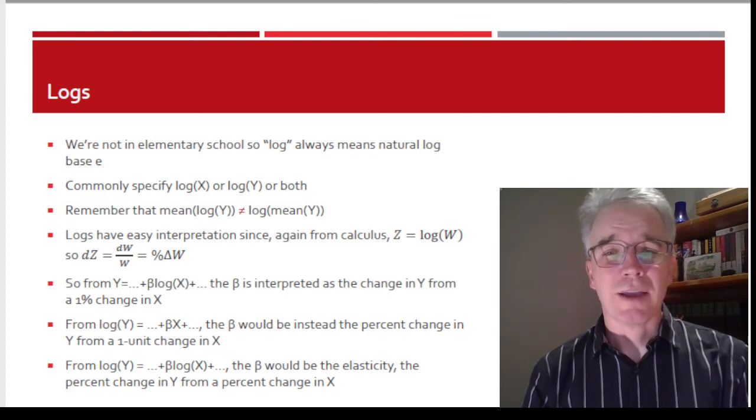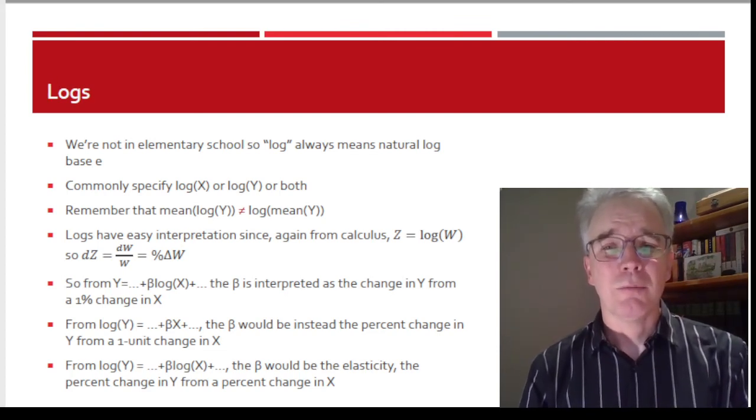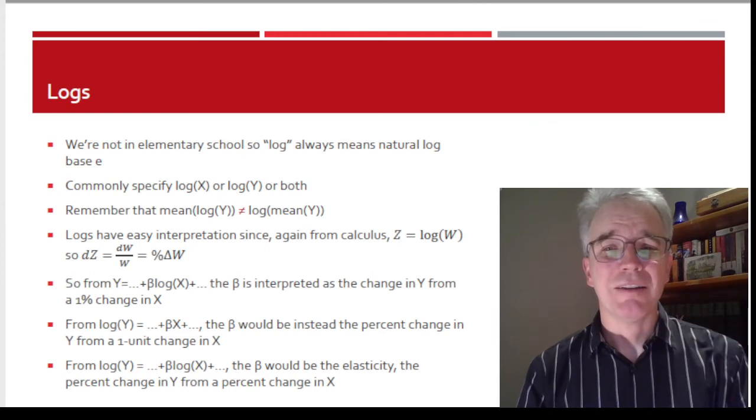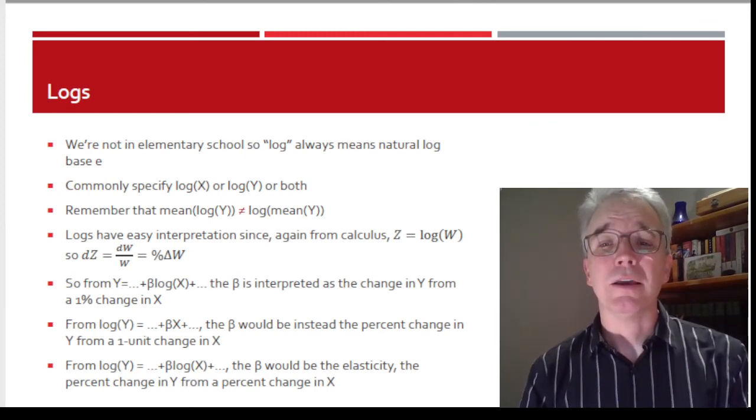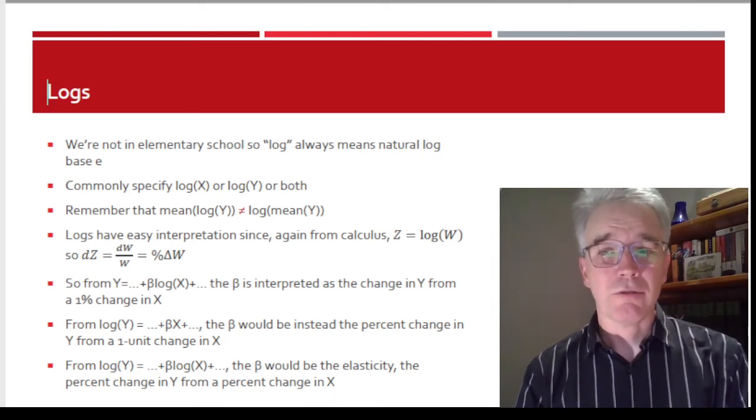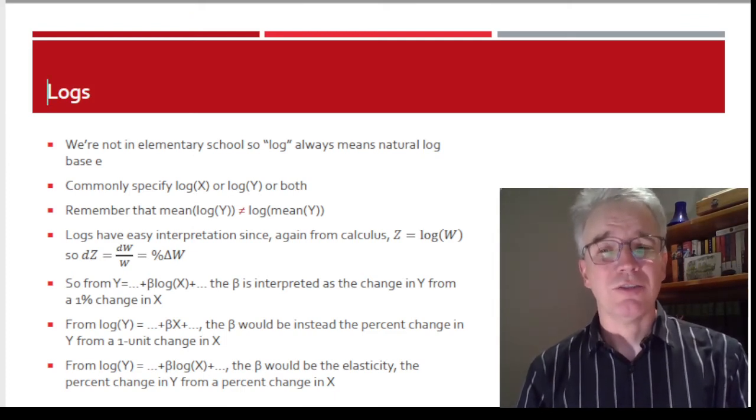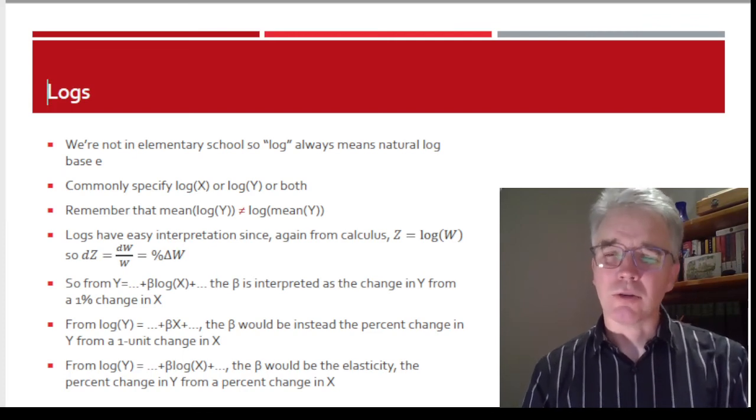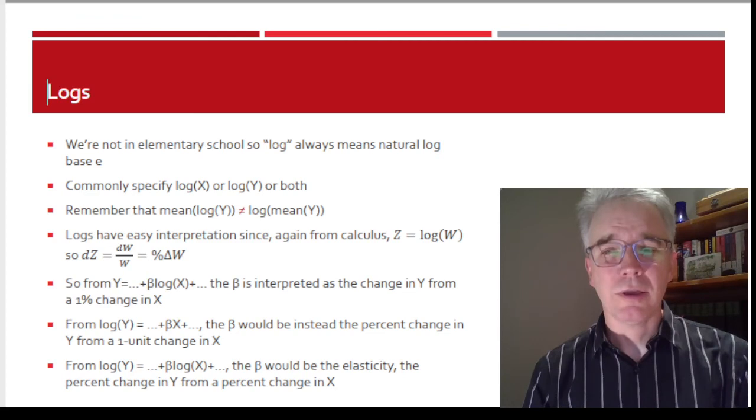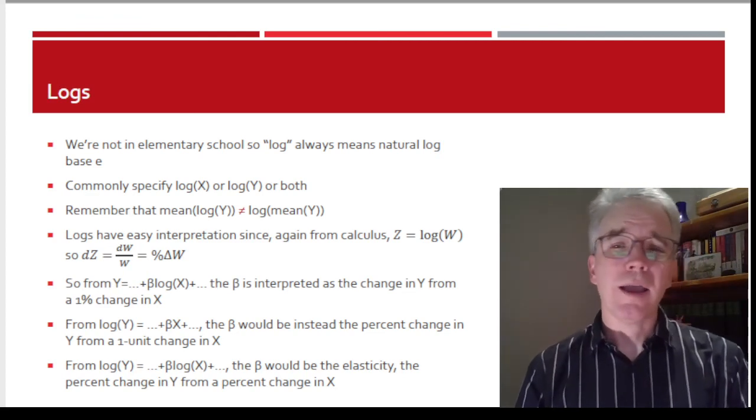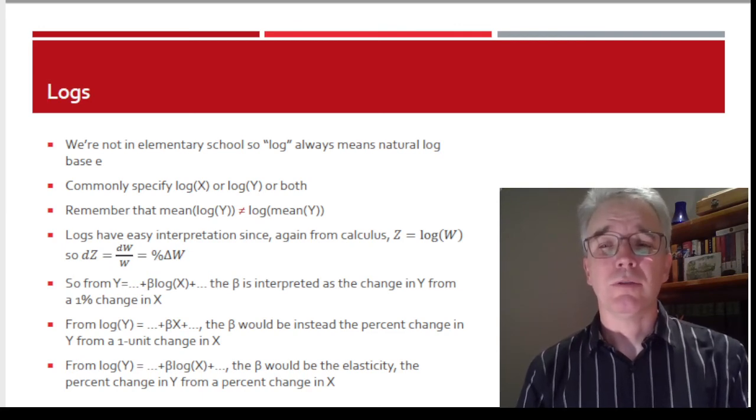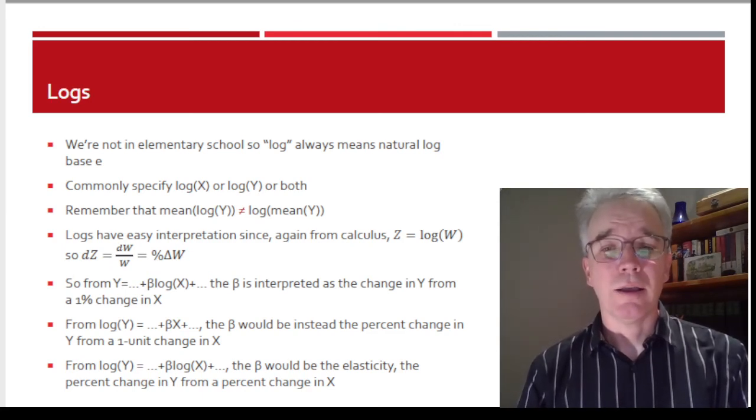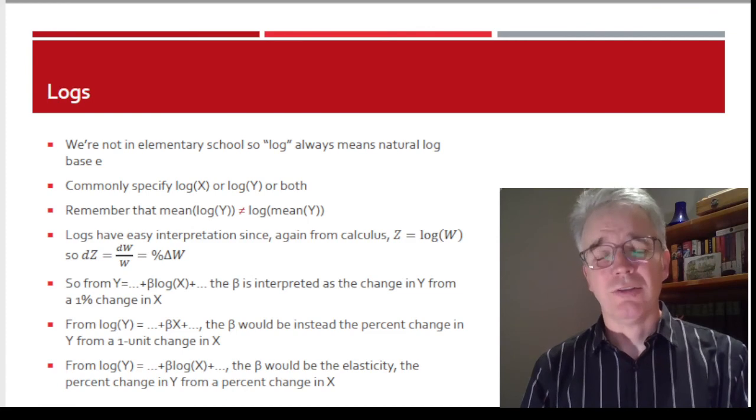So if I have log(X) as my variable in the regression instead of X, then I can interpret that coefficient, that beta, as the change in Y from a 1% change in X. Depending on your specification, that might make a little bit more sense. Obviously, I could do log(Y), and now the beta would instead be the percent change in Y from a 1-unit change in X.